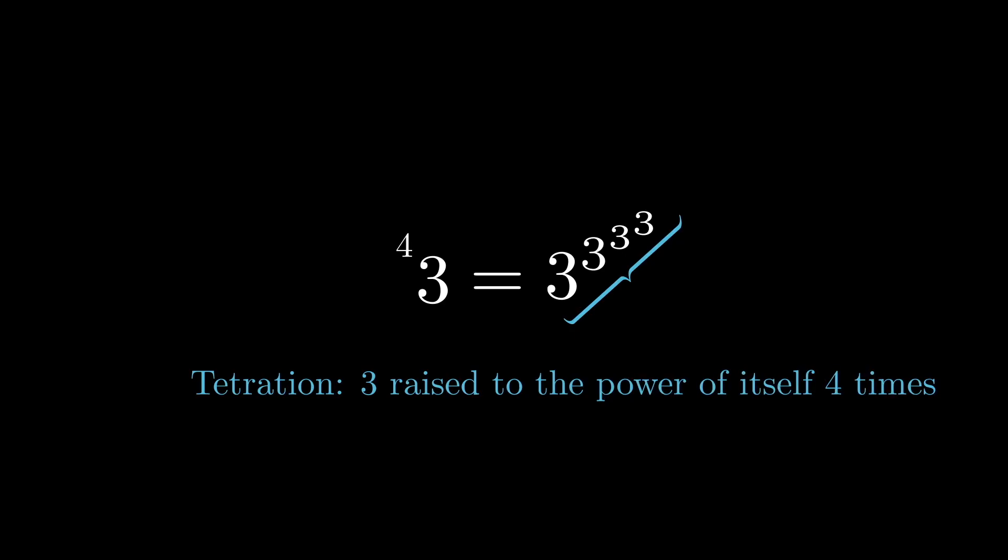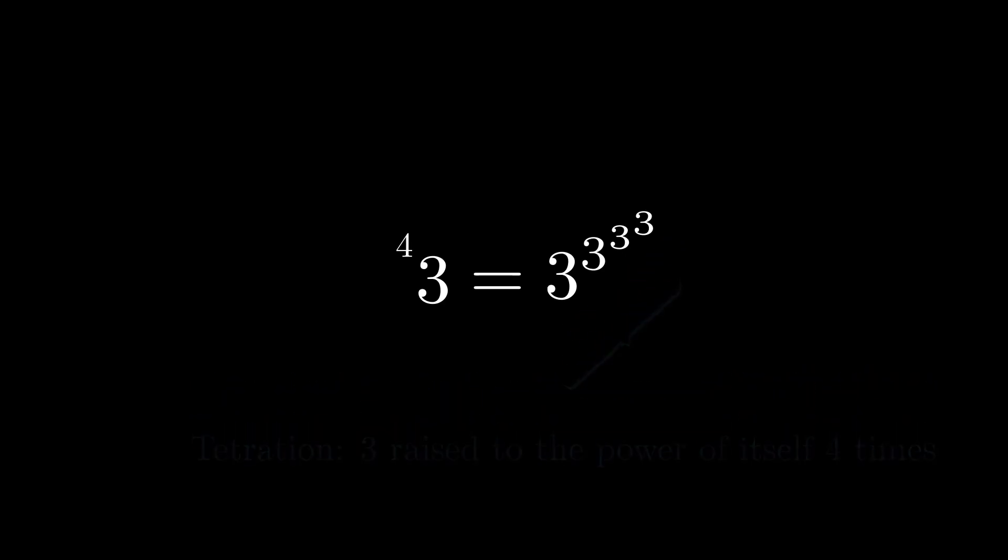We compute these in the same way we compute exponents, working top to bottom down this tower. 3 cubed is 27. Next, 3 to the 27th is getting pretty large pretty quick. And this number is ridiculously large.